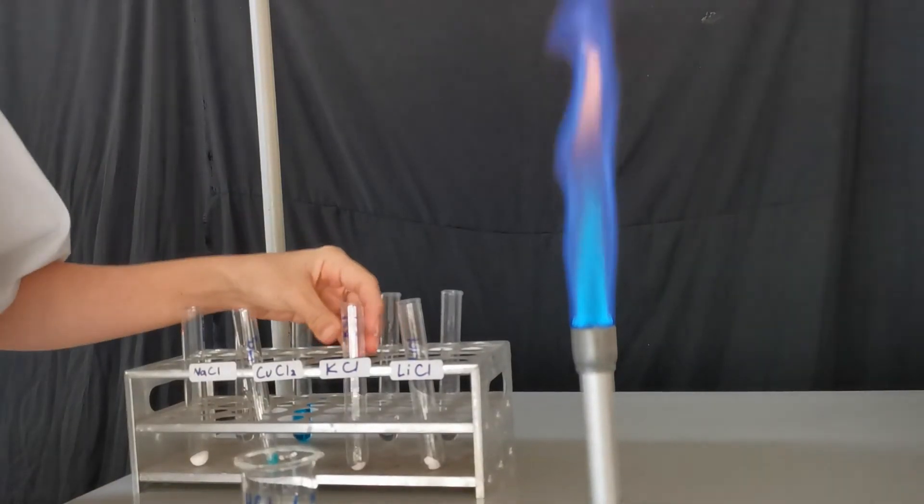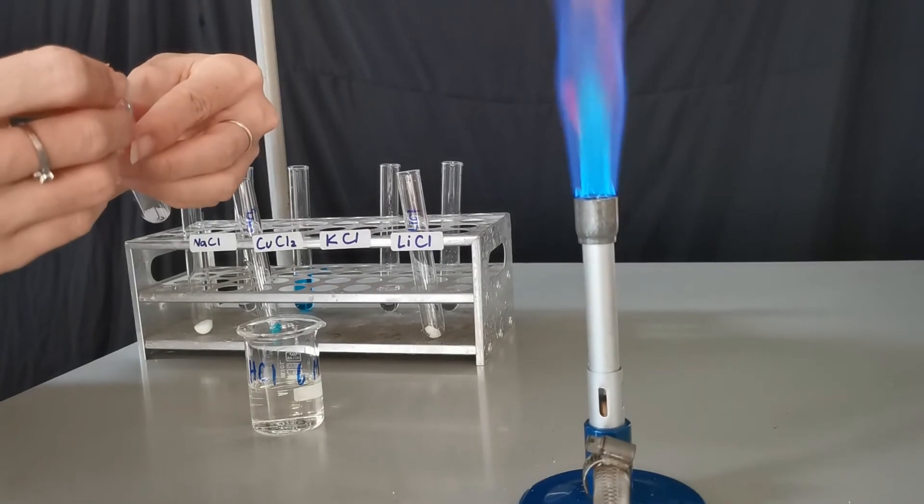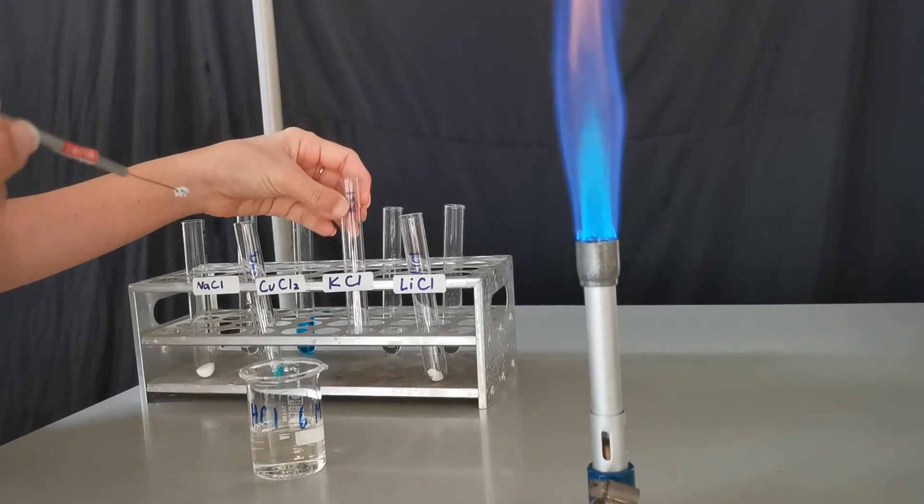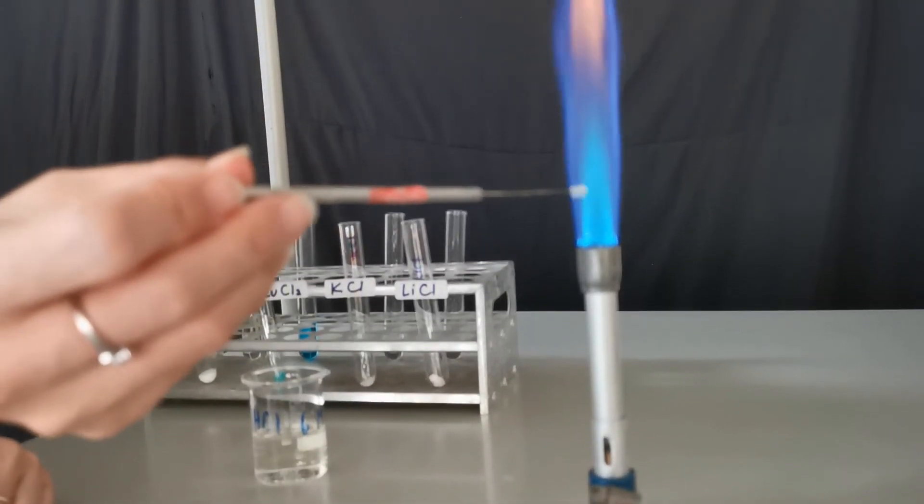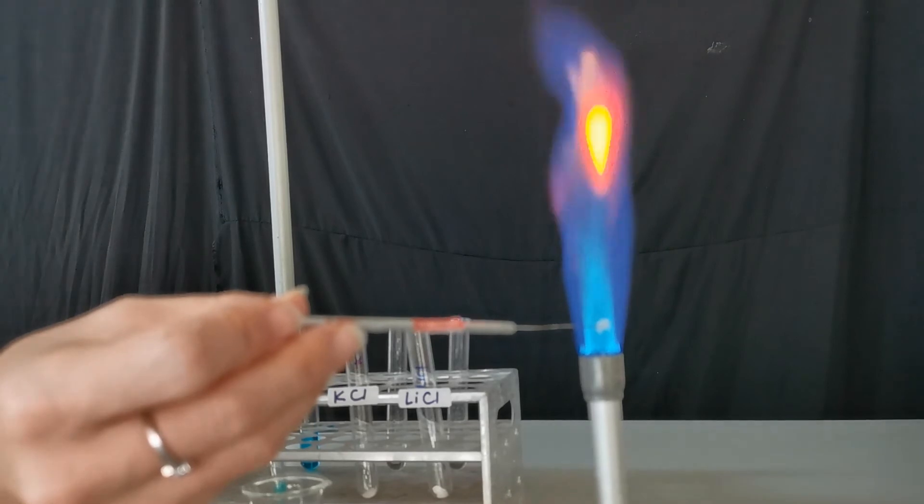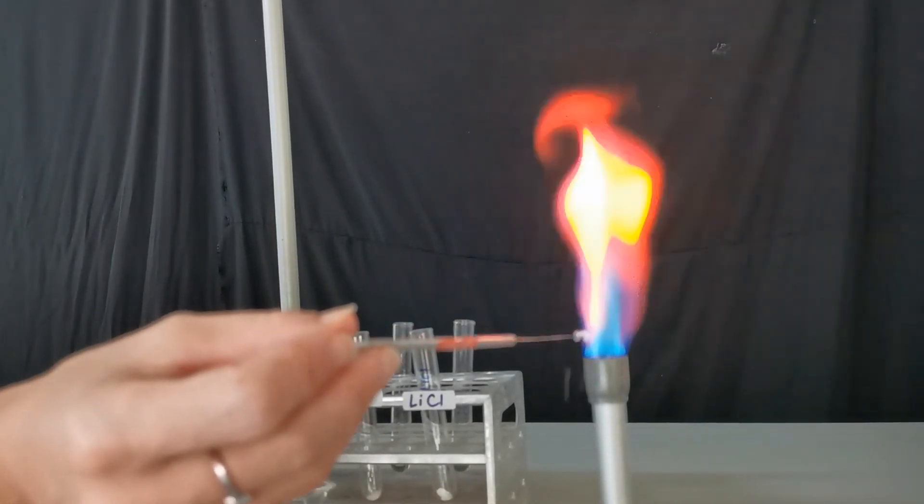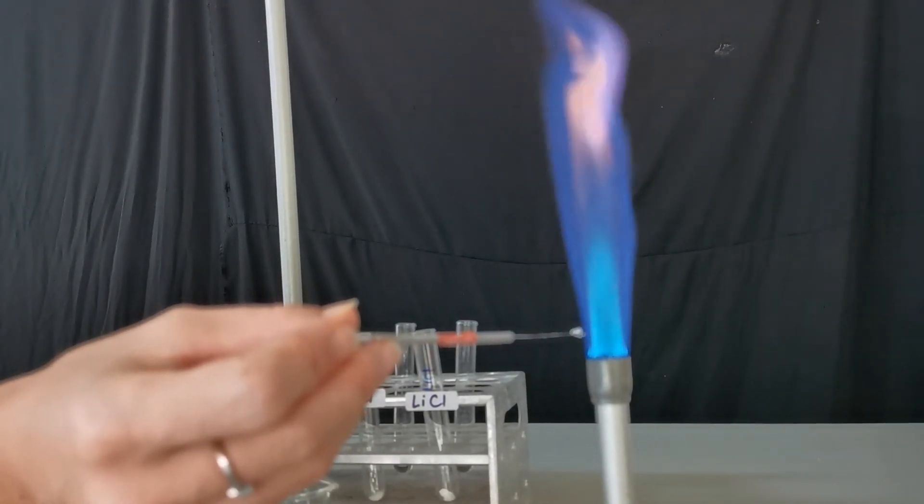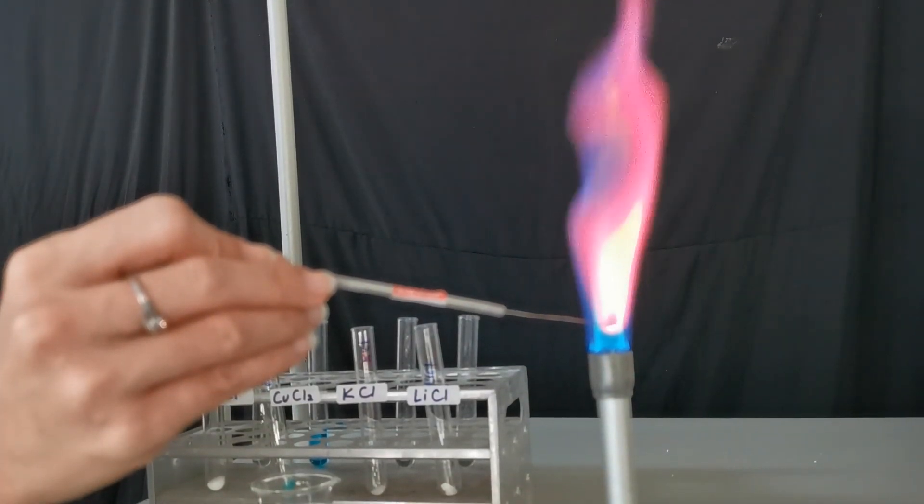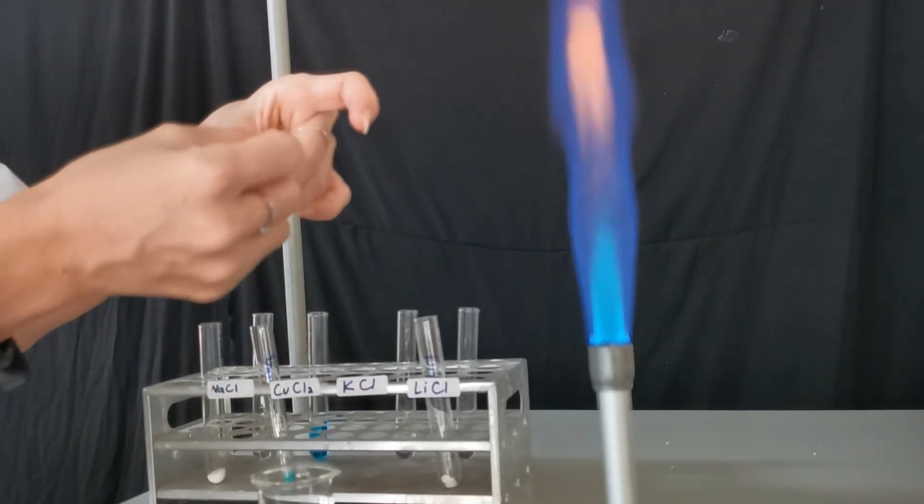The last ion that we're going to do a flame test on is potassium. Sometimes the color of potassium flame is a bit hard to see. Let's see what it looks like. The flame color has a tinge of purple, if you can see on this side here. It's got a tinge of purple lilac color, and that's exactly the color that we want to see for potassium.